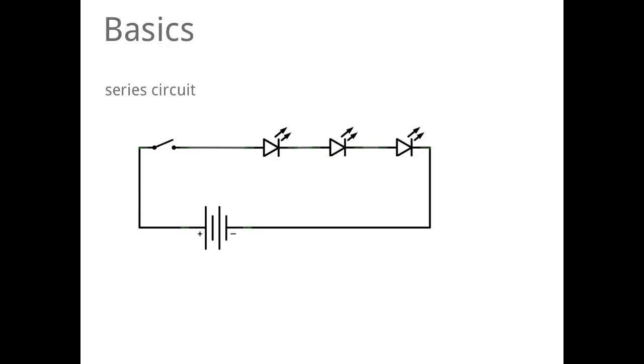We can arrange electrical components in different ways. For example, in a series circuit which is even called a voltage dividing circuit. It's called voltage dividing because each part, if they have the same inner resistor, will get the same voltage. So if our circuit has six volts, then they share the six volts so that each LED will get two volts. The current in this kind of circuit is everywhere equal.